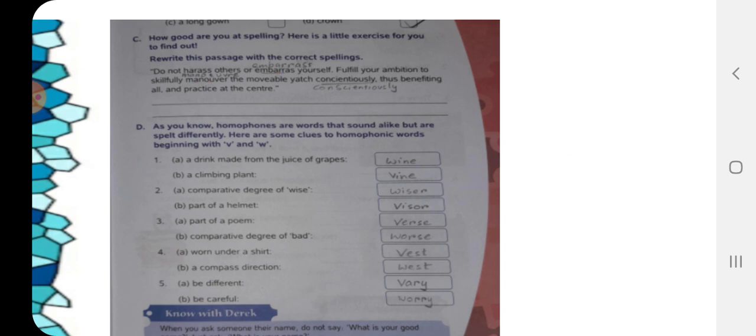Next we are coming to number D children. As you know, homophones are words that sound alike but are spelled differently. Homophones are actually sounds which are very similar to each other when you hear it. But they are spelled differently. They have a different spelling.